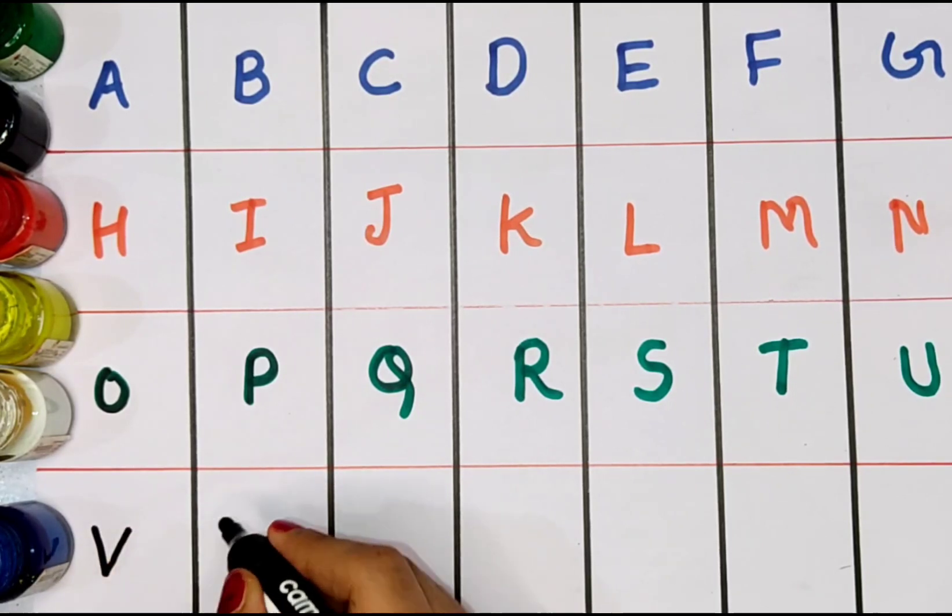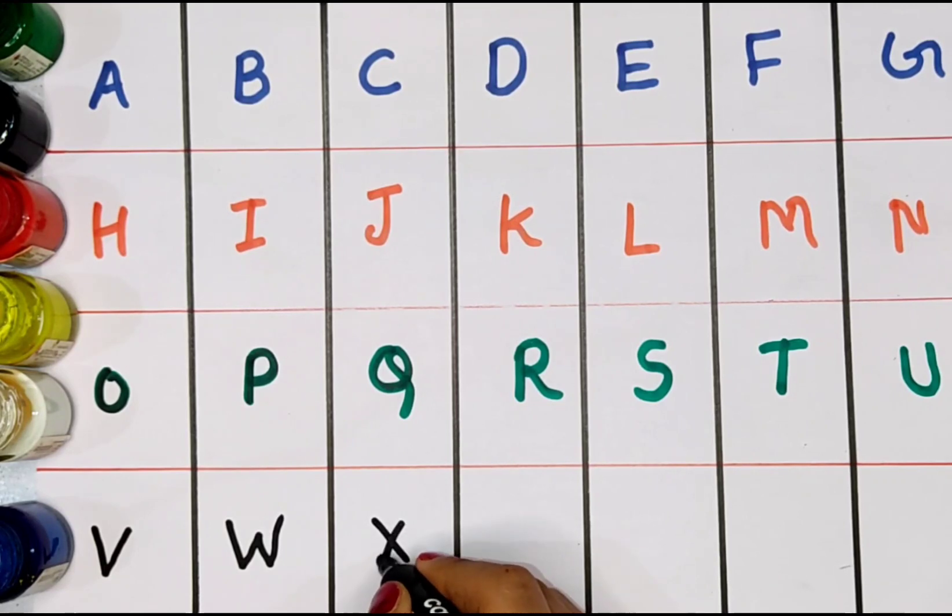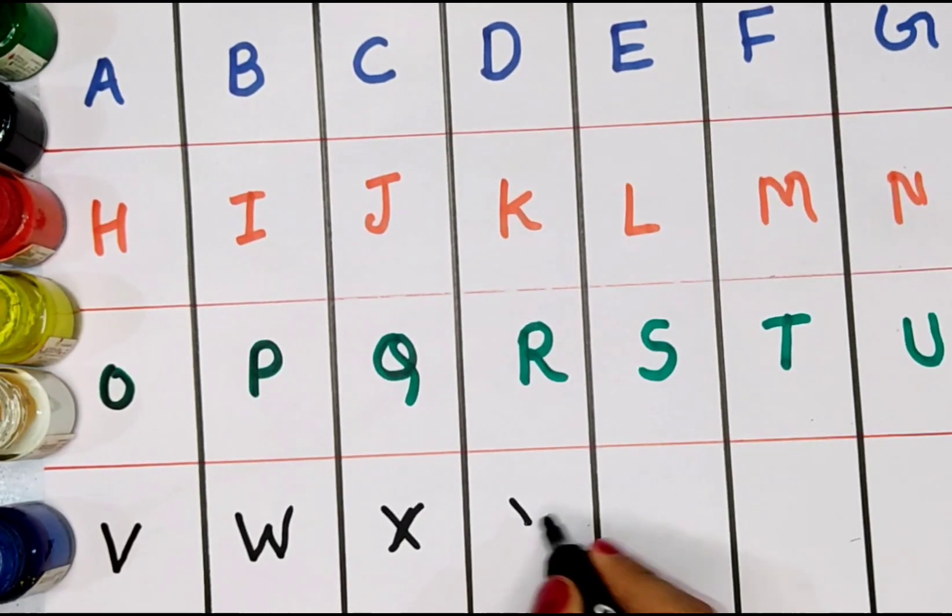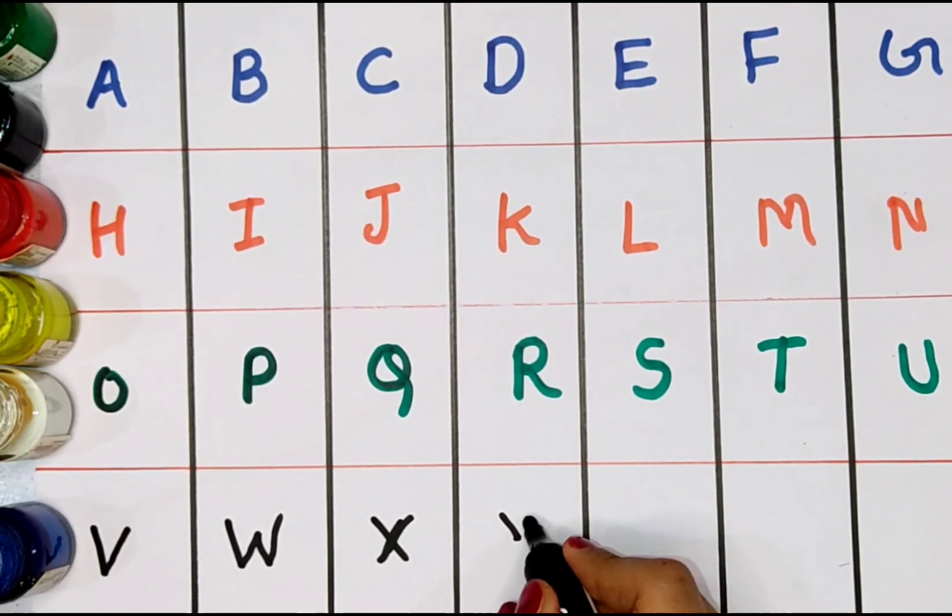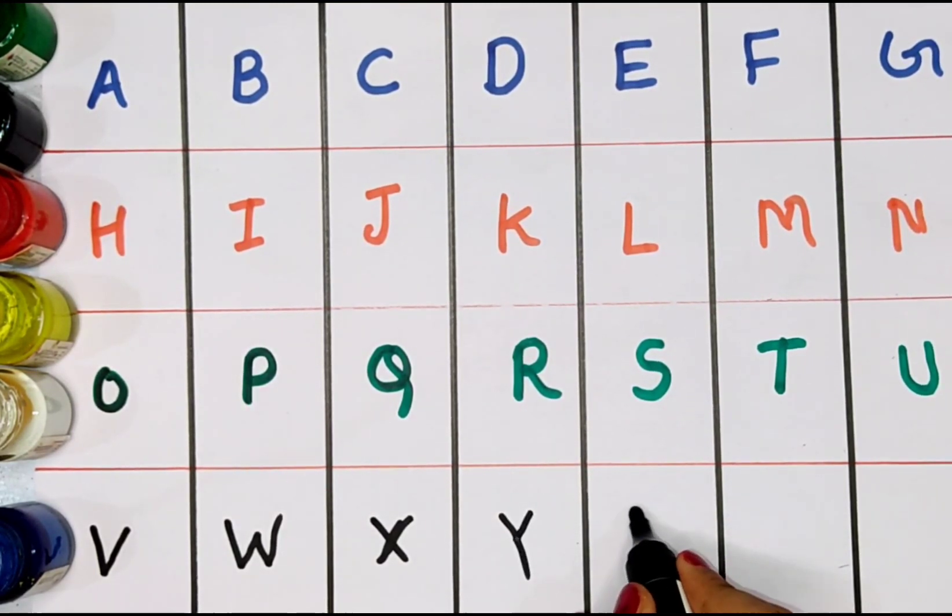V. V for van. W. W for watermelon. X. X for xylophone. Y. Y for yard. Z. Z for zebra.